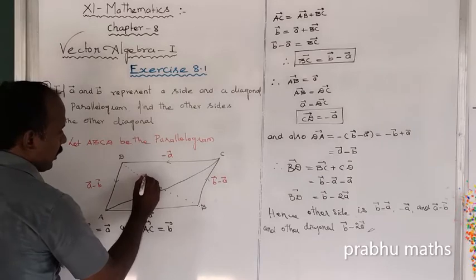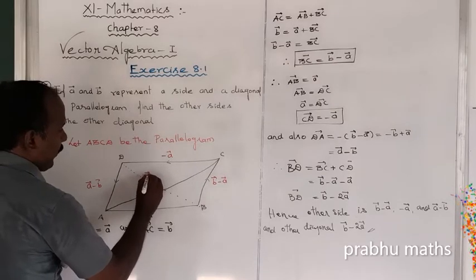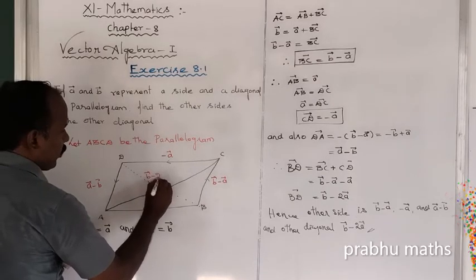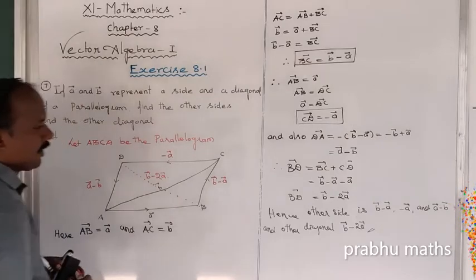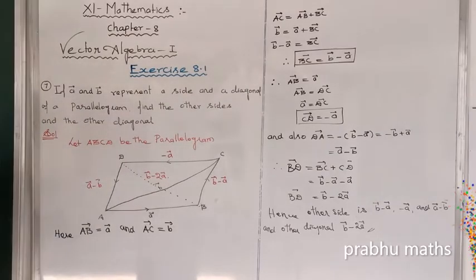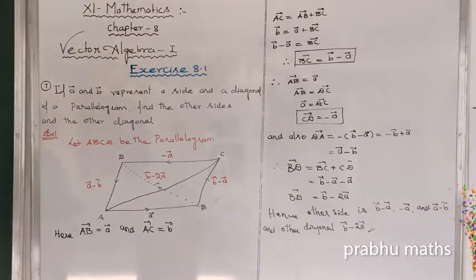So the final answer: other sides are b minus a vector, minus a vector, and a vector minus b vector. The other diagonal is b vector minus 2a vector.